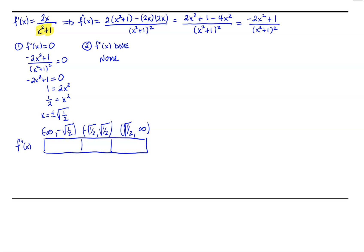In the first interval, let's test negative 1 — a nice convenient value. So f double prime at negative 1 equals negative 2 times (negative 1) squared plus 1, over the quantity (negative 1) squared plus 1, all squared. Notice our denominator will always be positive. Looking at our numerator, we have basically negative 2 plus 1, so the numerator is negative. A negative over a positive makes this value negative, so our second derivative is negative on this first interval.